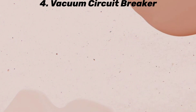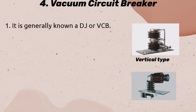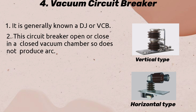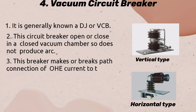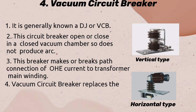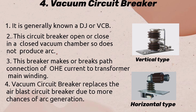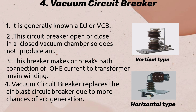Vacuum Circuit Breaker: It is generally known as DJ or VCB. This circuit breaker opens or closes in a closed vacuum chamber, so it does not produce an arc. This breaker makes or breaks the path connection of OHE current to the transformer main winding. The Vacuum Circuit Breaker replaces the air blast circuit breaker due to more chances of arc generation in the latter.